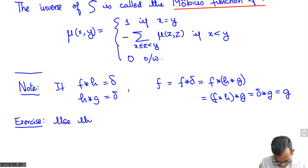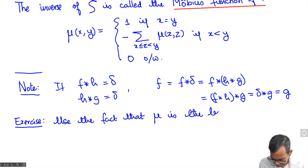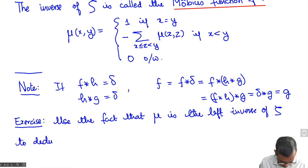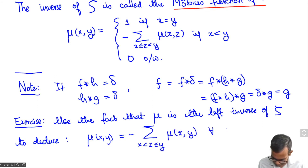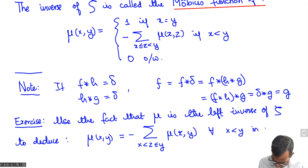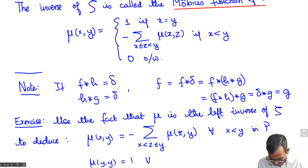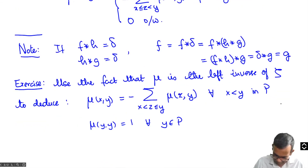Here is a little exercise for you: use the fact that mu is the left inverse of zeta to deduce that mu(x,y) equals minus the sum over x < z ≤ y of mu(z,y) for all x < y. Of course mu(y,y) = 1 for all y. So these two equations completely determine mu, and you can compute mu in two ways, either using the first equation or the second.